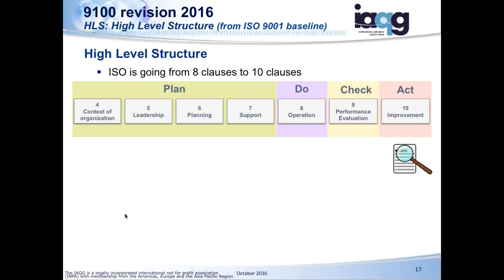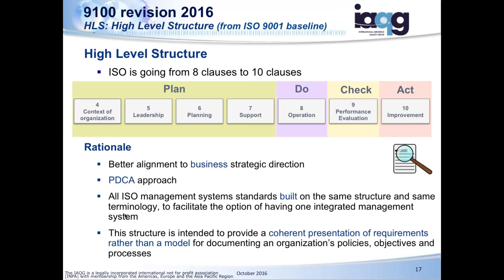The new structure follows a Plan-Do-Check-Act approach. Plan covers the context of the organization, leadership, planning, and support. Do — which we used to call product realization — is now called 'operation.' Check is the performance evaluation, and Act is the improvement aspect. There's no requirement for QMS documentation to exactly mirror that structure, but if you do want to change it, we recommend you change it to your business processes — your value stream. That resonates because you're speaking the language of your company.